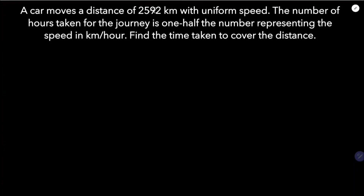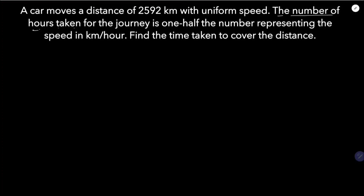A car moves a distance of 2592 km with uniform speed. The number of hours taken for the journey is one half the number representing the speed in km per hour. Find the time taken to cover the distance. I will consider the speed as my variable.